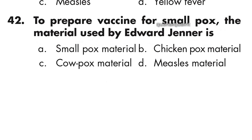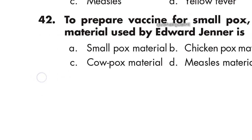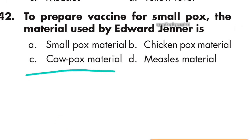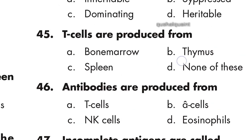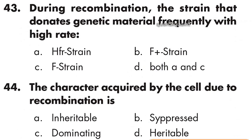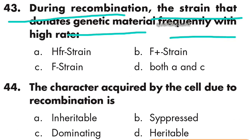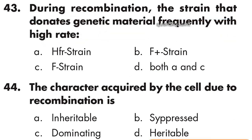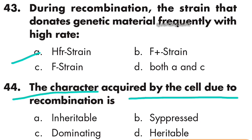Question 42: To prepare a vaccine for smallpox, the material used by Edward Jenner is cowpox material, option C is right. Question 43: During recombination, the strand that donates genetic material with high frequency is the HFR strain, option A is right.